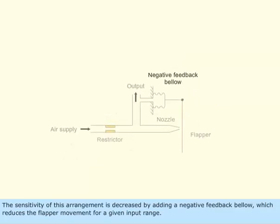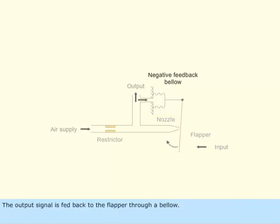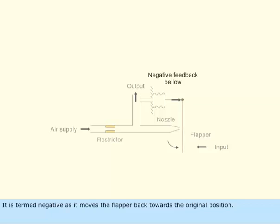The sensitivity of this arrangement is decreased by adding a negative feedback bellow, which reduces the flapper movement for a given input range. The output signal is fed back to the flapper through a bellow. It is termed negative as it moves the flapper back towards the original position.